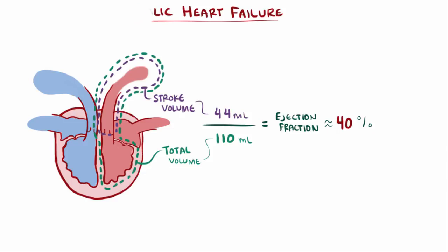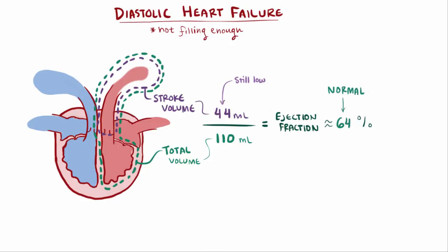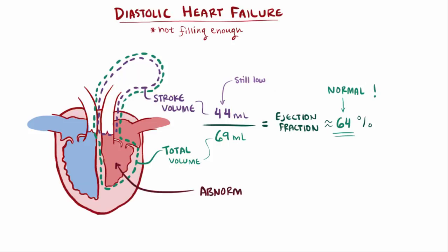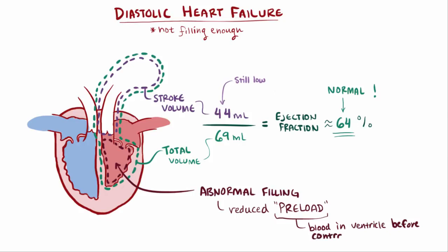In addition to systolic heart failure, you've also got diastolic heart failure, which is where the heart's squeezing hard enough but not filling quite enough. In this case, the stroke volume is low but the ejection fraction is normal. Because it's not filling enough, there's a low total volume — say about 69 milliliters — and even though both are low, 44 milliliters divided by 69 milliliters is still 64%. The failure is caused by abnormal filling of the ventricle so the chamber doesn't get fully loaded or stretched out in the first place. Another term for this is having a reduced preload, which is the volume of blood in the ventricle right before the ventricular muscle contracts.